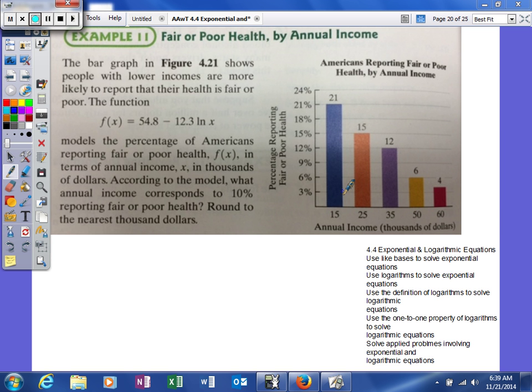So the function right there, 54.8 minus 12.3 natural log of x, models the percentage of Americans reporting fair or poor health, f(x), in terms of annual income, x, in thousands of dollars. According to the model, what's the annual income? It corresponds to 10% reporting fair or poor health, round to the nearest thousand dollars.